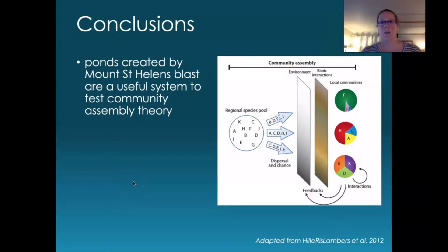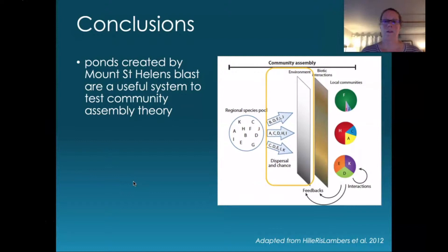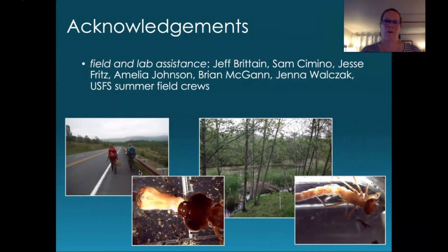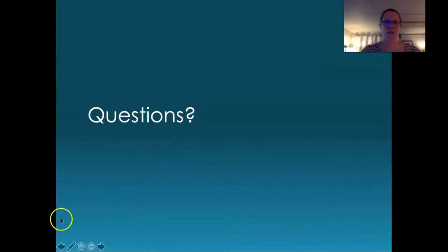To wrap up: this is a really useful study system to understand our theories about community assembly and primary succession. We only saw signals of some processes occurring, but that might change in the future — it's really dynamic. More generally, this is an important way for us to understand how humans affect the landscape and how communities respond to those disturbances. I'd like to thank the many field and lab assistants that have worked with us over time, and I'll happily take any questions.